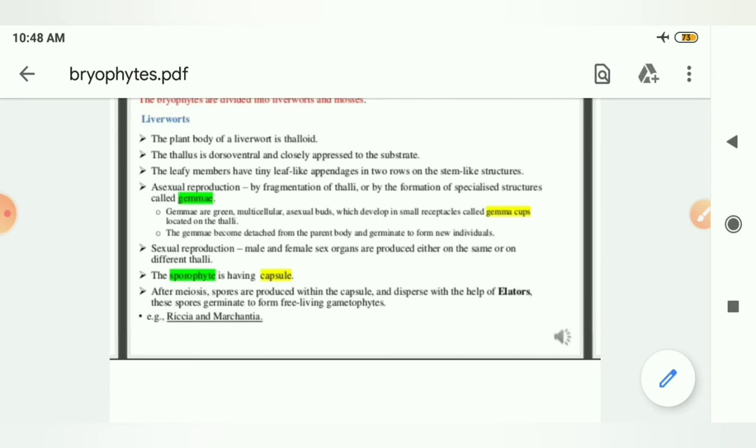Whereas if I talk about sexual reproduction, male and female sex organs are produced. It can be produced on the same thallus or it can be produced on the different thallus also. So there are different type of liverworts. Some of them undergo asexual reproduction and some of them undergo sexual reproduction.